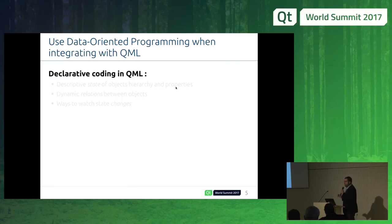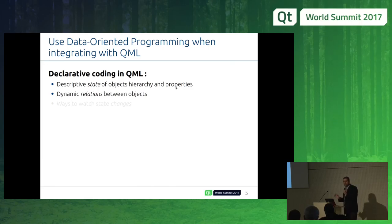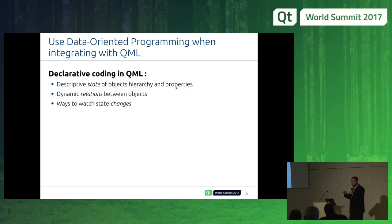Just before going deeper into data-oriented programming, I want to do a reminder about declarative coding. What is declarative coding in QML? First, it is the descriptive state of objects inside the hierarchy — QML visually looks like a tree and each object has a state described by its properties, so the visual feedback is the property set of an object. We can also have dynamic relations between objects in QML. Other declarative languages out there don't have this meaning of relation — you can just declare some structure like HTML or CSS. But QML has a very good system of object-to-object relations and ways to watch changes, so more than just declarative coding, it's also event-driven coding.